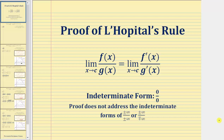Welcome to a partial proof, or a proof of one case, of L'Hôpital's rule when we have the indeterminate form of zero divided by zero. L'Hôpital's rule states the limit as x approaches c of f(x) divided by g(x) equals the limit as x approaches c of f′(x) divided by g′(x), when the original limit is in the indeterminate form of zero divided by zero or any of the indeterminate forms listed here. But in this video, we only address the indeterminate form of zero divided by zero.